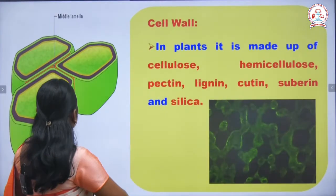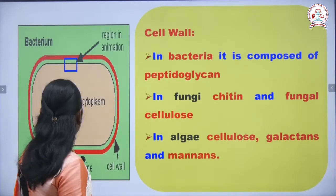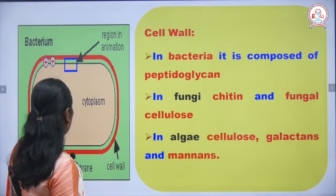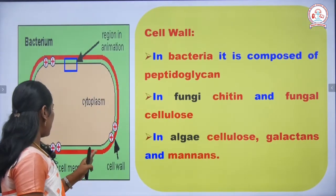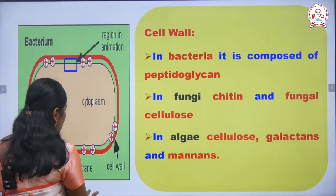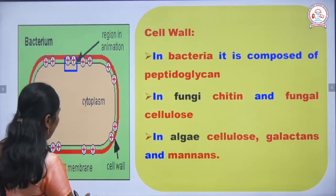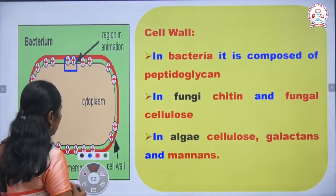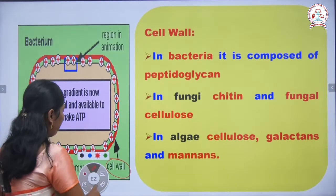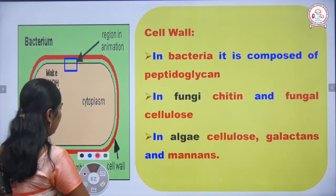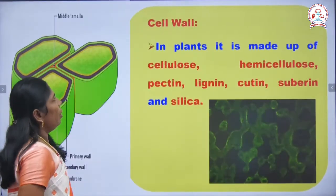In bacteria, you can see the cell wall materials — the outermost layer is the cell wall, and next to it is the cell membrane. The cell wall material of bacteria is peptidoglycan, also called mucopeptide.